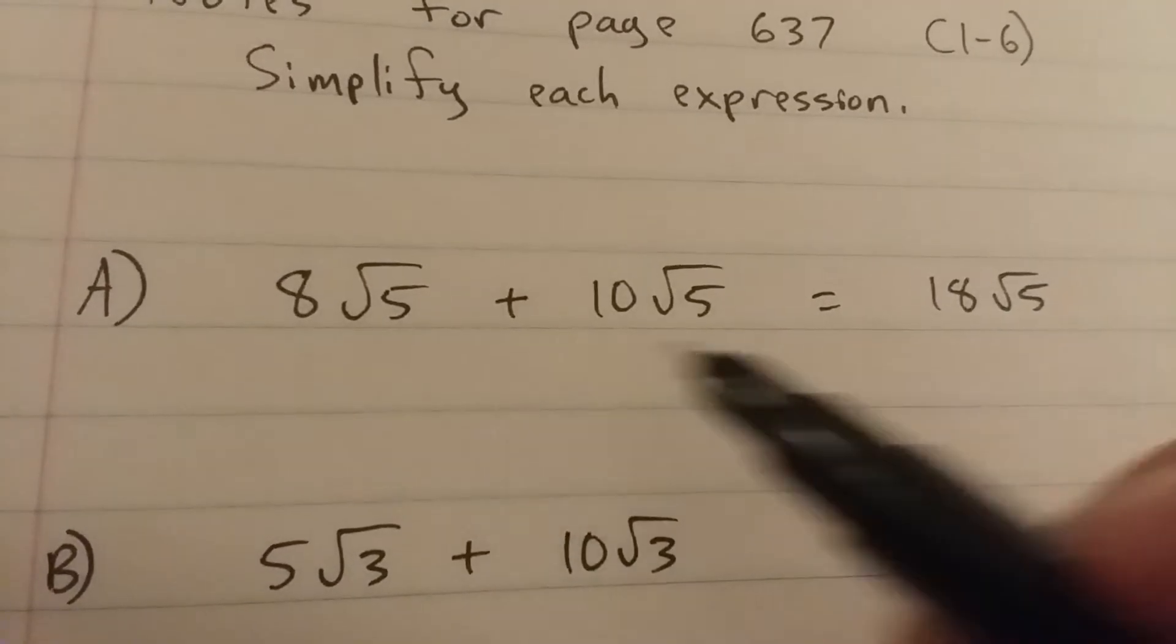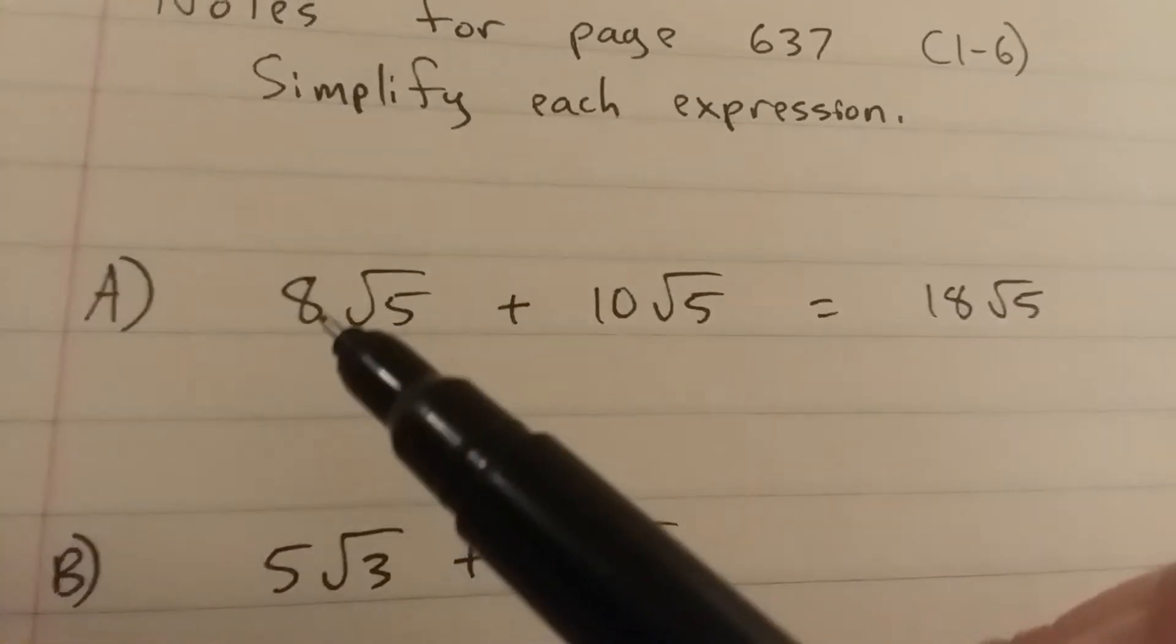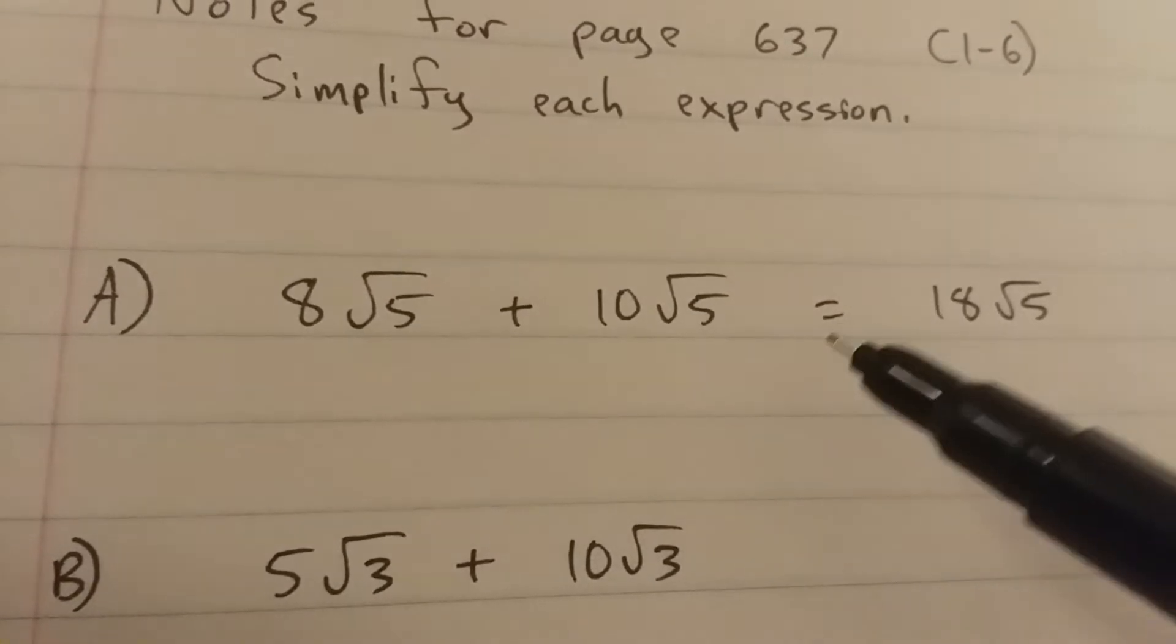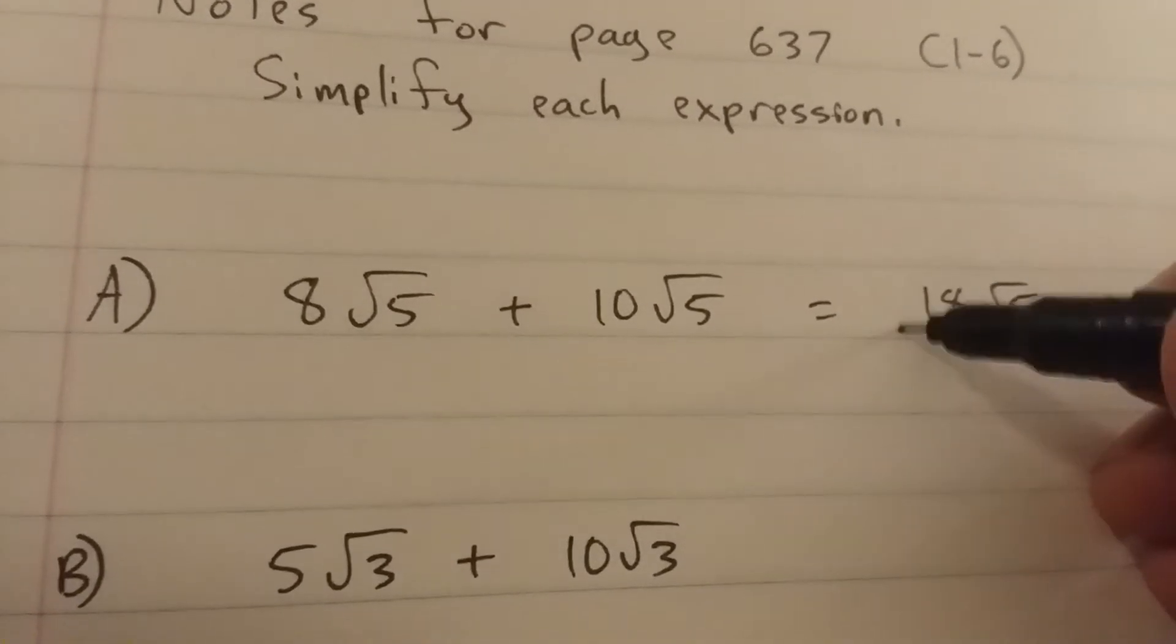The value under the root kind of works like x. Think of it as 8x plus 10x equals 18x. That's how this works.